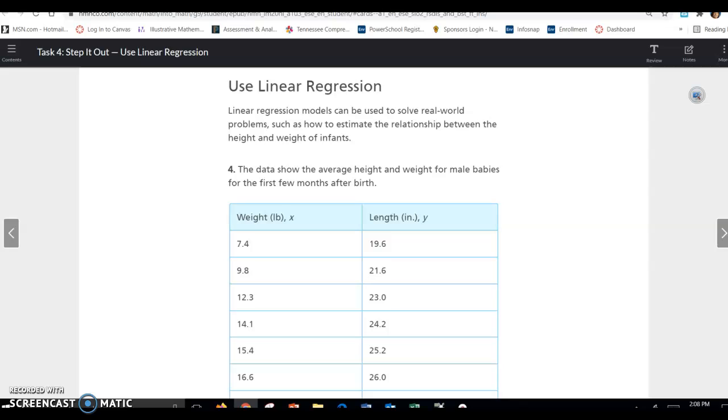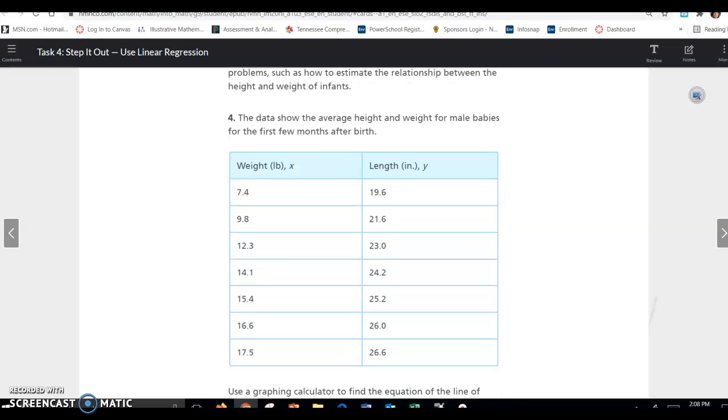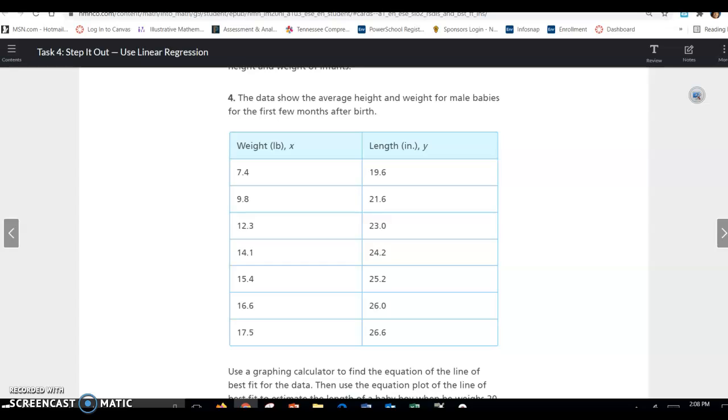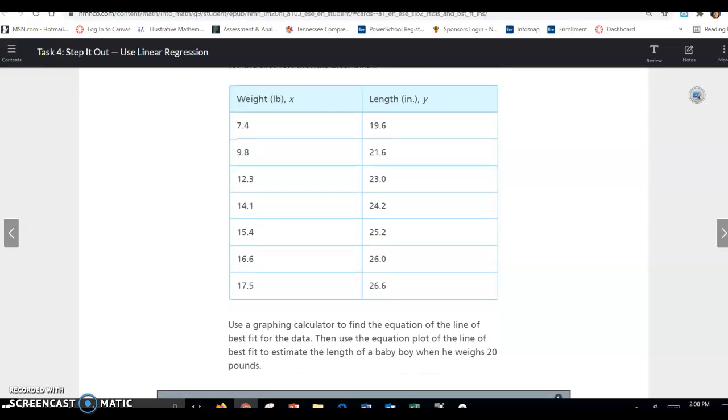Use linear regression. Linear regression models can be used to solve real-world problems, such as how to estimate the relationship between the height and weight of infants. The data shows the average height and weight for male babies for the first few months after birth. So X is the amount of weight in pounds, and Y is the length in inches.